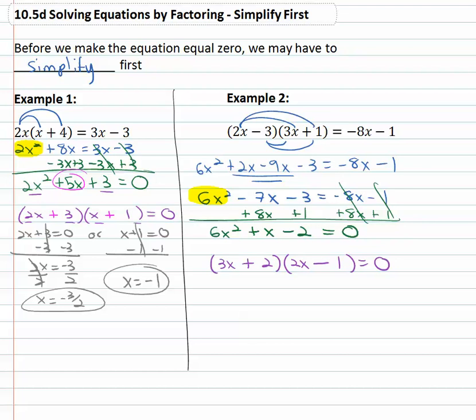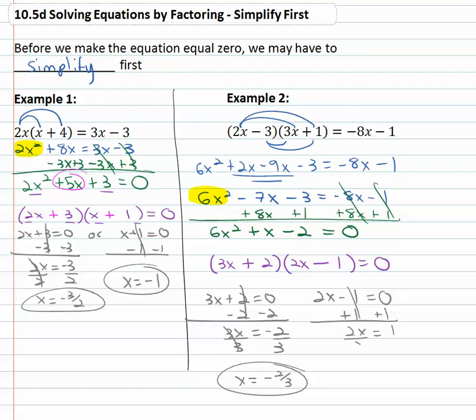Once it's factored, we can set both factors equal to zero, so that means we have 3x plus 2 equals zero and 2x minus 1 equals zero. Solve the first equation by subtracting 2, 3x equals negative 2. Divide by 3 and x is equal to negative 2 thirds. Solve the second equation by adding 1 to both sides, 2x equals 1, divide by 2 and x is equal to 1 half and we've got our solutions.